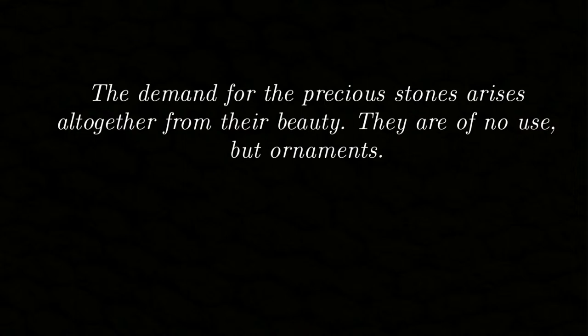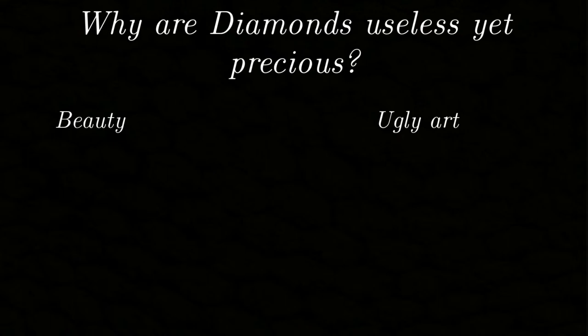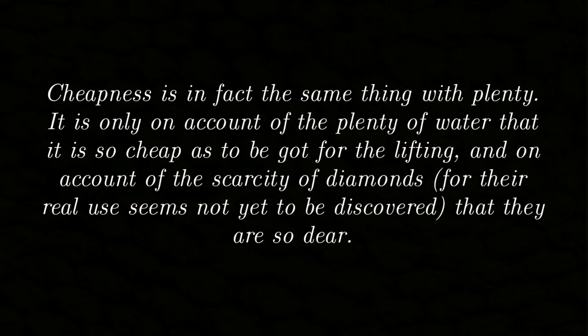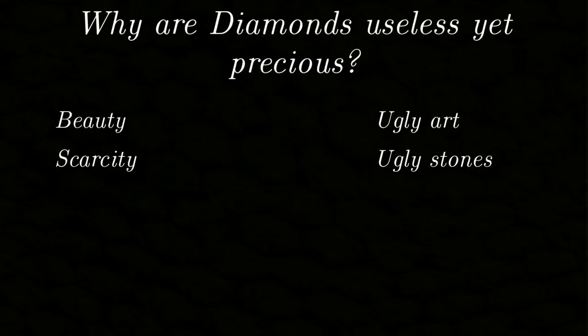From a modern perspective, it is easy to find counterexamples here. For instance, the art market functions in a way so that the value of a piece of art often stands in no relation to its beauty, and a lot of art can be quite ugly, even to its buyers, and still be a good investment. Next, Smith considers scarcity, and in fact writes: 'Cheapness is in fact the same thing with plenty. It is only on account of the plenty of water that it is so cheap as to be got for the lifting, and on account of the scarcity of diamonds, for the real use seems not yet to be discovered, that they are so dear.' This statement is true, and the reason forgery is punished so severely — you are not covering a pretty picture, you are lowering the value of an investment. But its reverse is not true: there might be very scarce stones which nevertheless are not very valuable, because they are ugly, or at least plain.